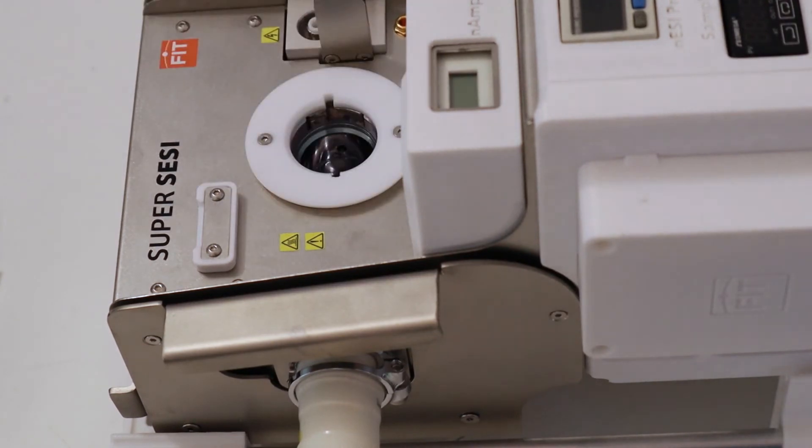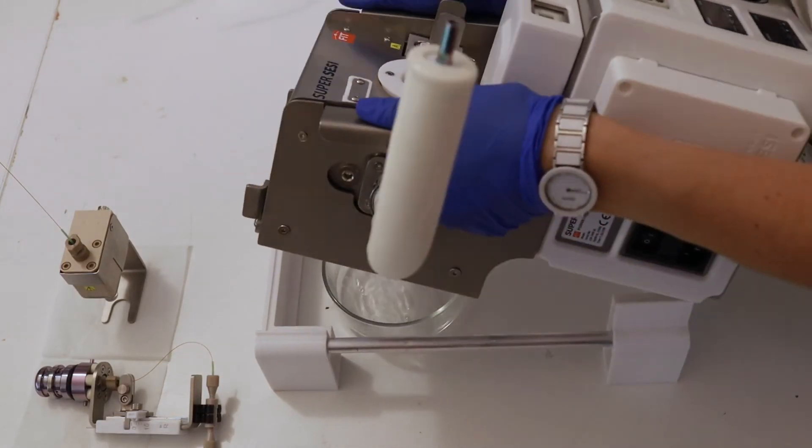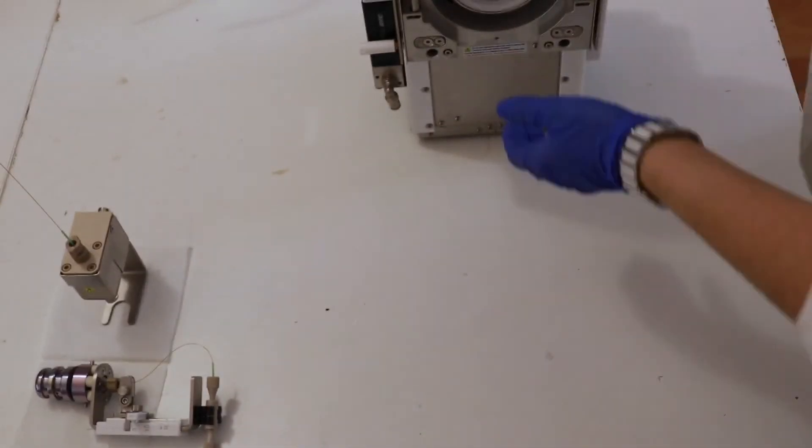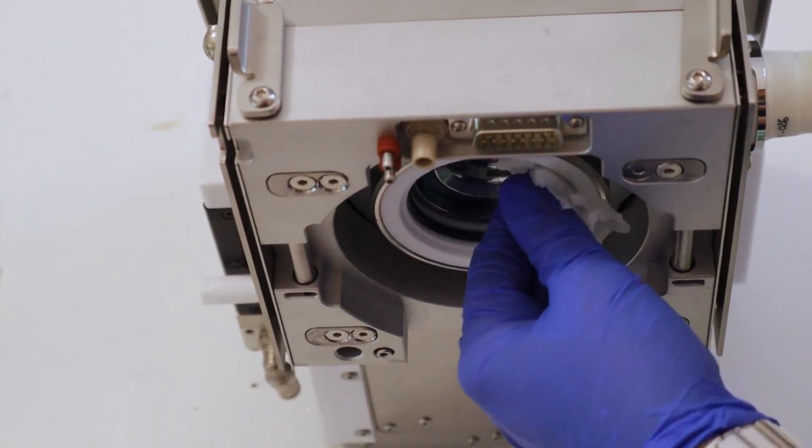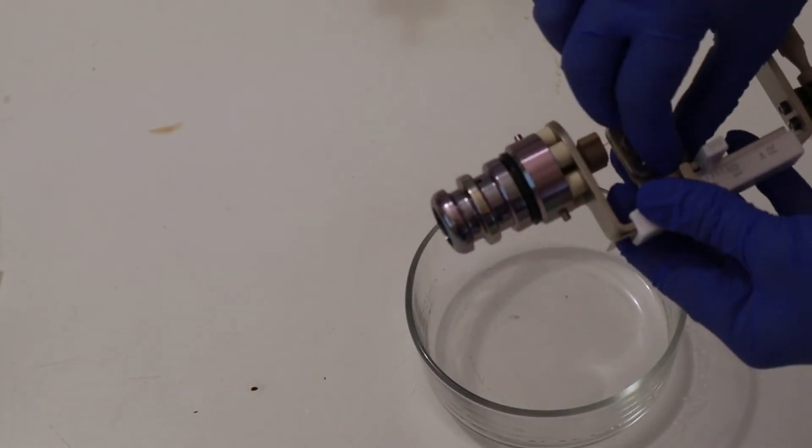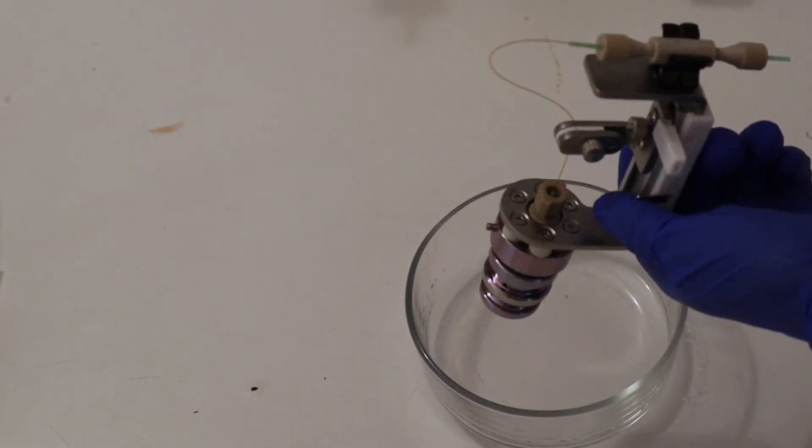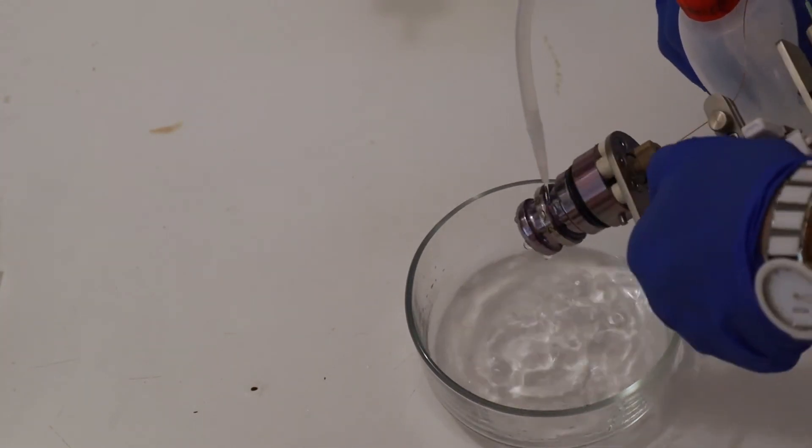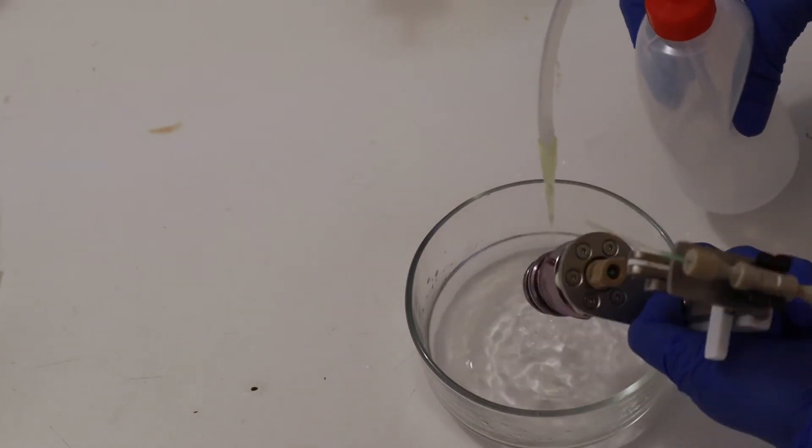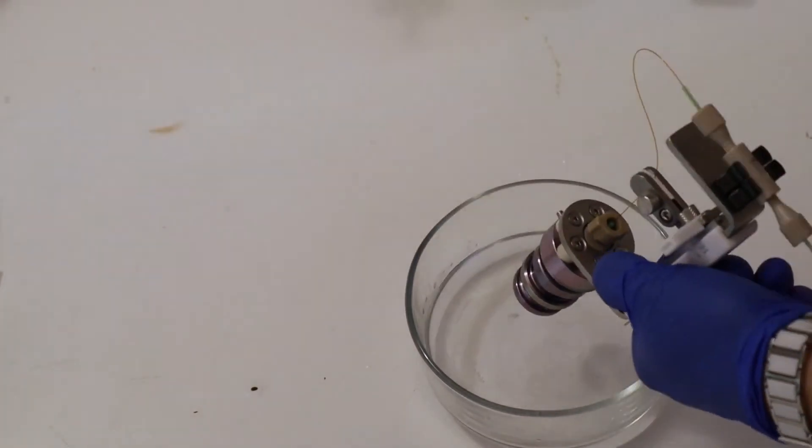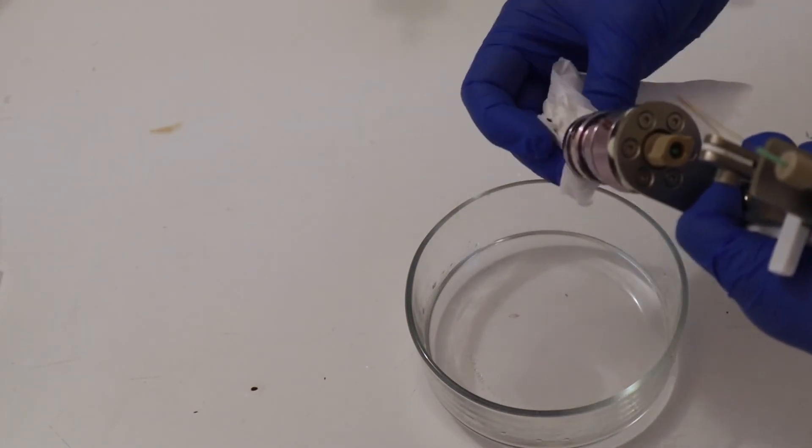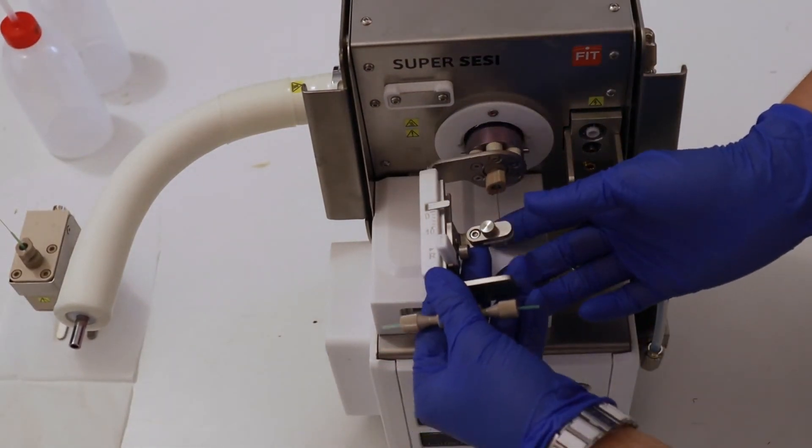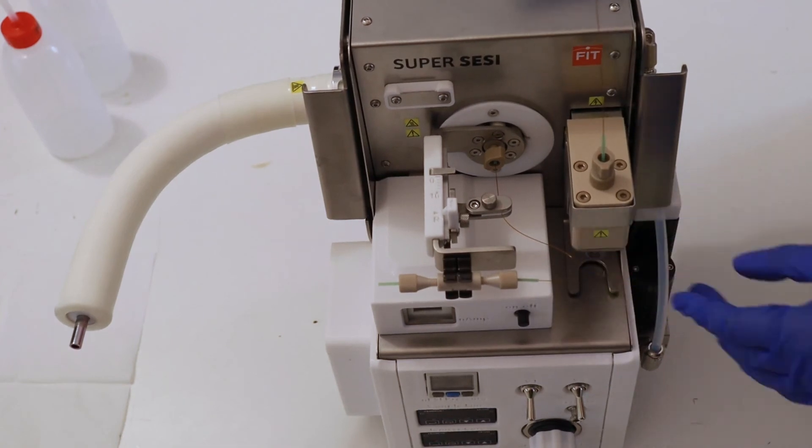Once rinsed, make sure it is not dripping. You can use a vacuum wipe to remove liquid excess and let it dry before connecting to the MS.